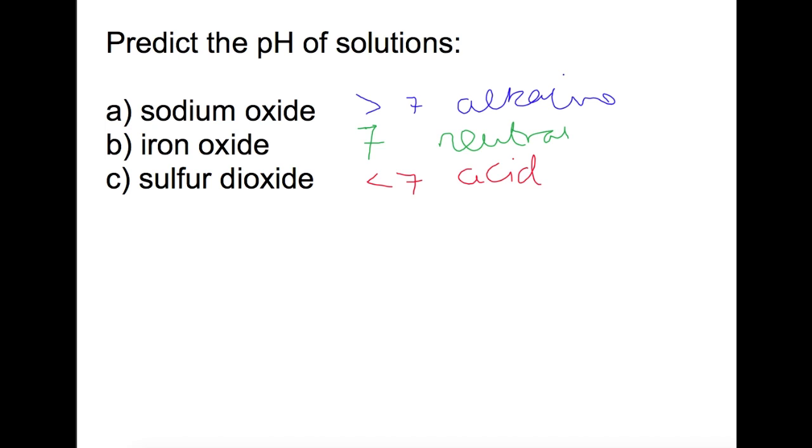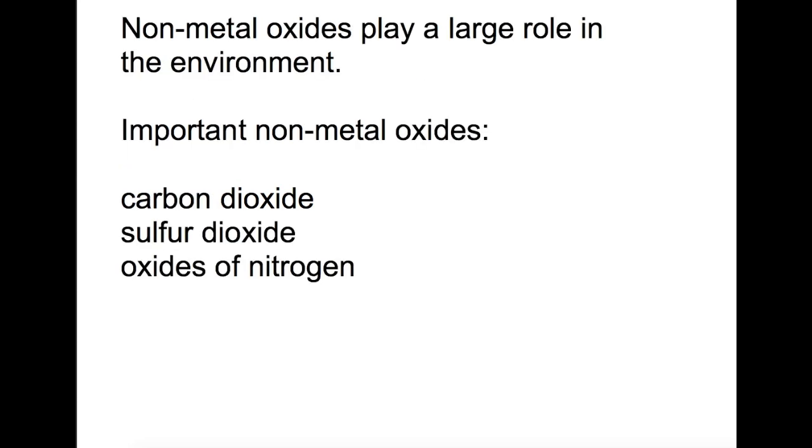So what effect do these metal and non-metal oxides have on the environment? Let's focus on the non-metal oxides. There are three in particular that are important: carbon dioxide, sulphur dioxide and the oxides of nitrogen.